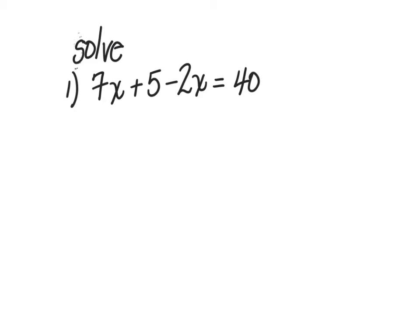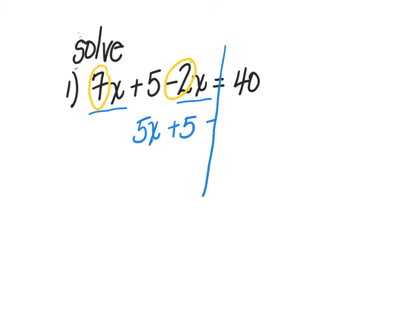The first equation we're going to solve is 7x + 5 - 2x = 40. I'm going to draw my line down the equal sign and look at the first step. I don't have fractions, I don't have parentheses to remove, but on the left side I have like terms I can combine: 7x and negative 2x. Combining those coefficients, 7 and negative 2, gives me 5x + 5 = 40.